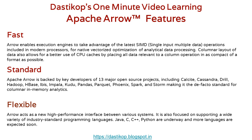Apache Arrow is also a standard — it is backed by key developers of 13 major open source projects, including Calcite, Cassandra, Drill, Hadoop, HBase, Ibis, Impala, Kudu, pandas, Spark, and Storm, making it the de facto standard for columnar in-memory analytics.